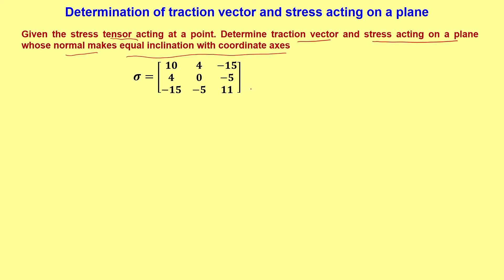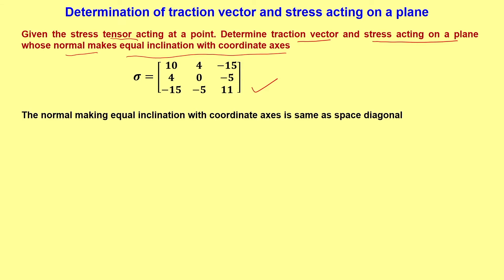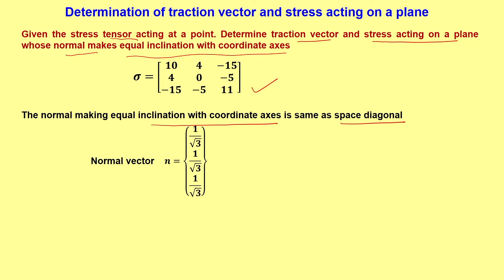Here we have been given the stress tensor with its components, so sigma is given. Normal making equal inclination with the coordinate axis is the same as the space diagonal, so we know that the normal vector n is equal to (1/√3, 1/√3, 1/√3). This was also discussed in the lecture.